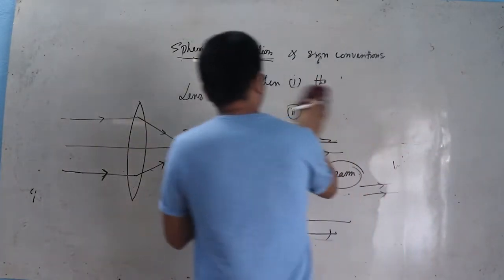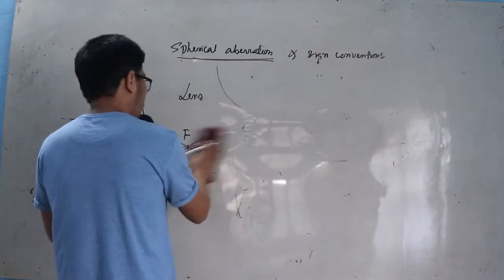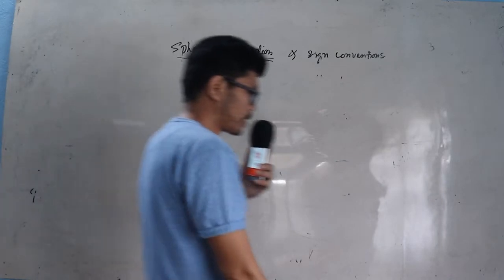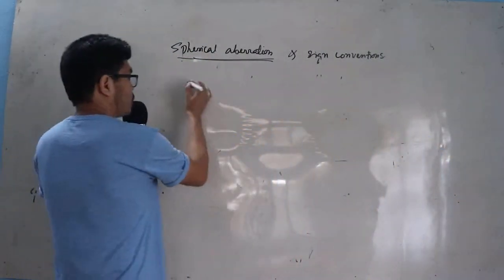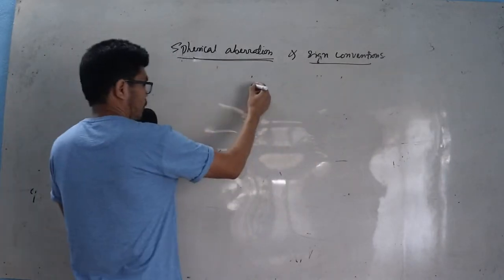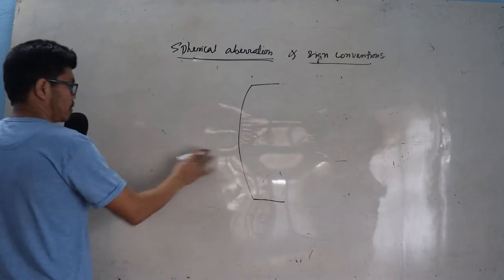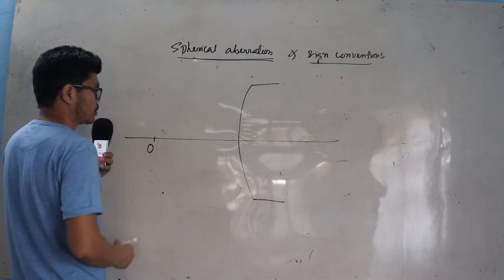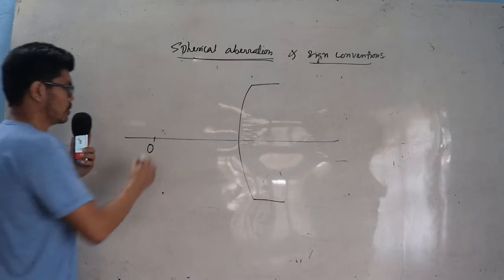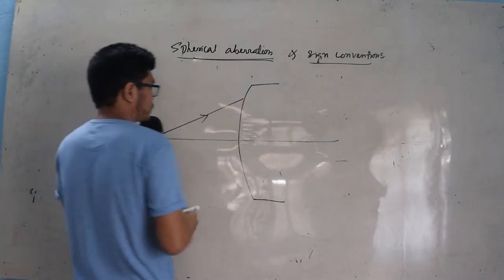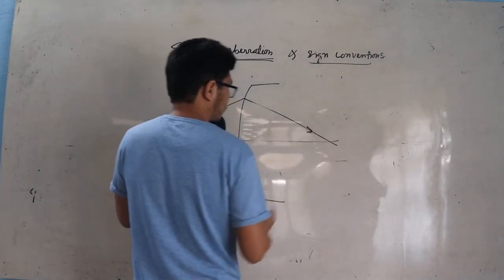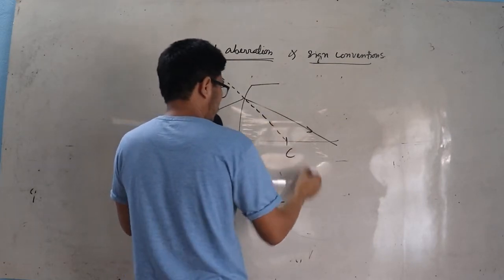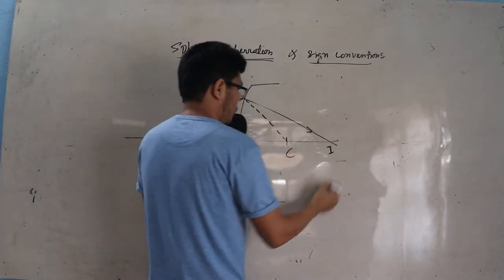Now we'll go to the sign convention — the new sign convention we often use in mathematical derivations, especially related to spherical refracting surfaces. Suppose you have a refracting surface and this is the principal axis, and you keep the object here on the principal axis. Then this is the incident ray, here is the refracted ray, this is the normal passing through the center of curvature, and the image is formed here.